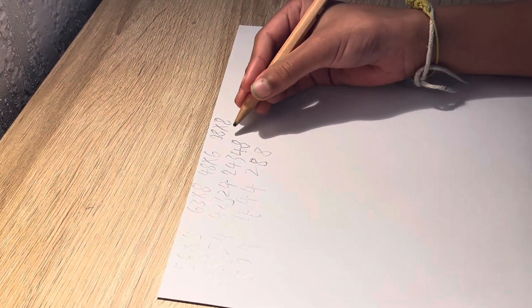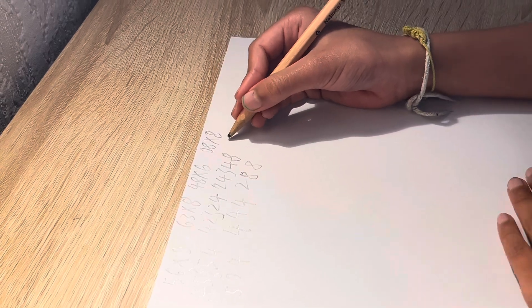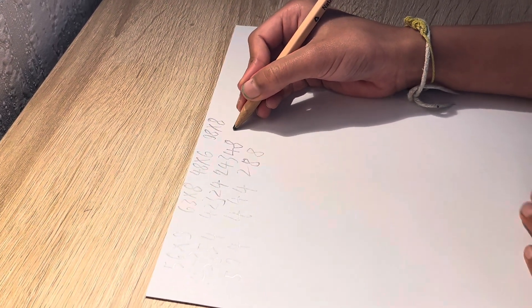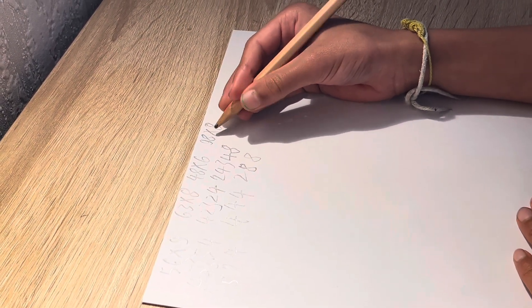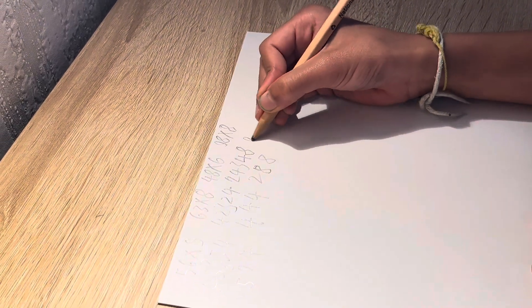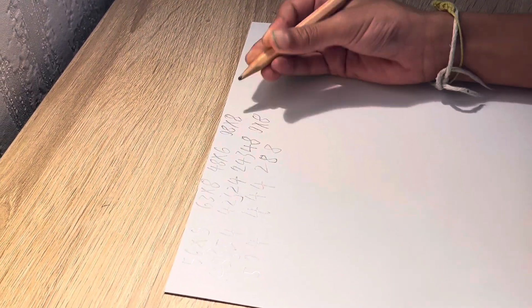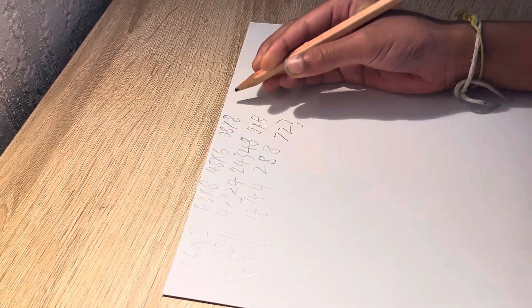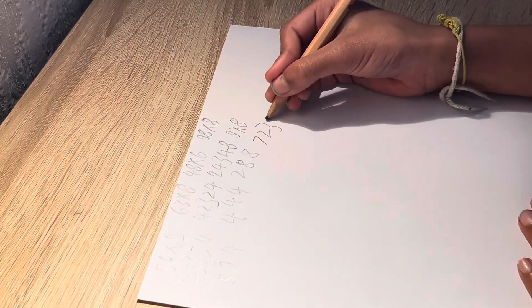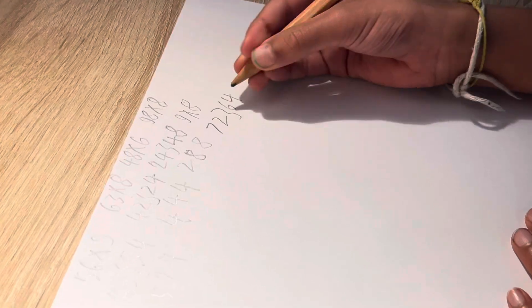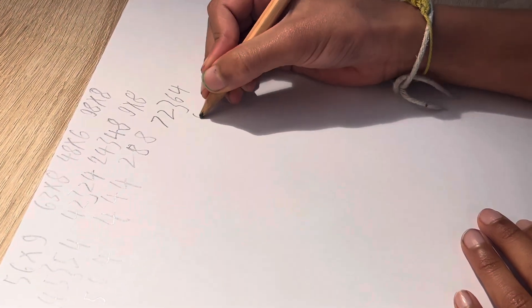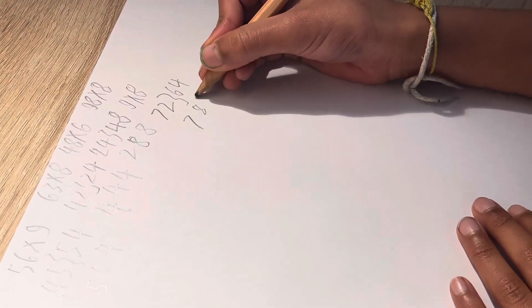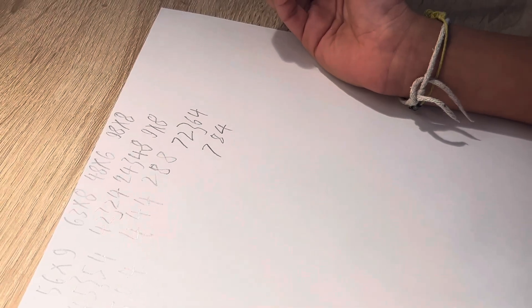Now last one, 98 times 8. So first do 9 times 8 which is 72. Put the step operator and 8 times 8 is 64. Now 2 add 6 is 8. Leave the 7. Leave the 4.